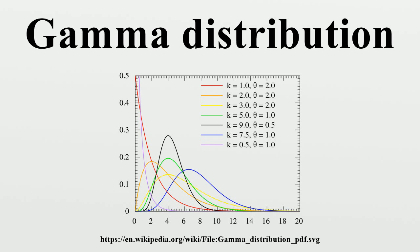Characterization using shape k and scale θ. A random variable x that is gamma distributed with shape k and scale θ is denoted by its probability density function. The probability density function using the shape-scale parametrization uses the gamma function evaluated at k. The cumulative distribution function is the regularized gamma function, where gamma is the lower incomplete gamma function. It can also be expressed in closed form if k is a positive integer.